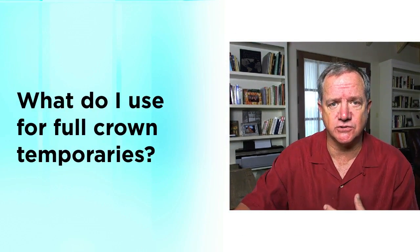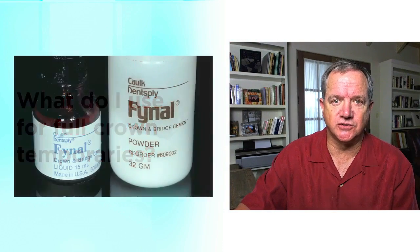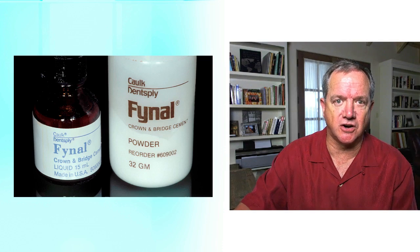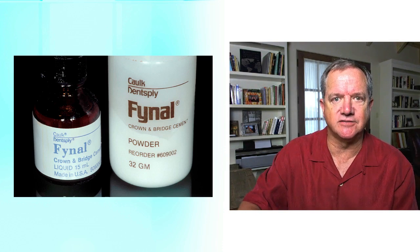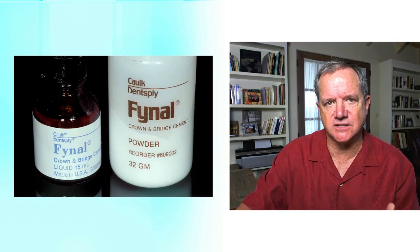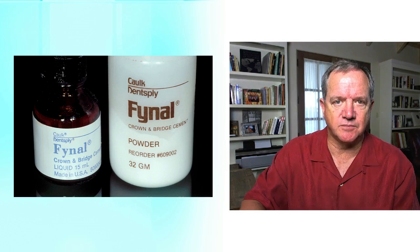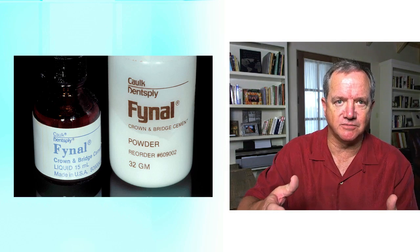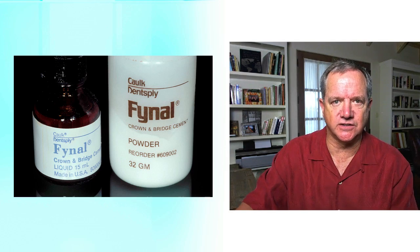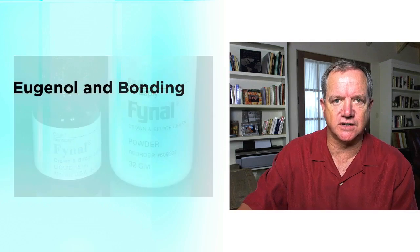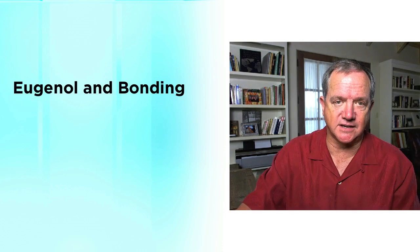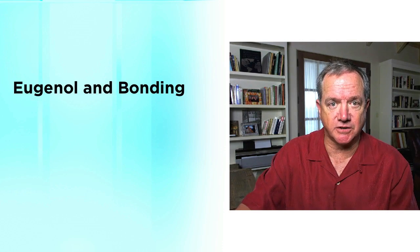Now, what do I personally use for full crown temporaries? Well, for pretty much 30 years, my typical temporary cement for full crowns has been Caulk Finol — for inlays, for retentive onlays, for full crowns. It's a reinforced ZOE cement, much like IRM is. Great properties: temporaries don't come loose, and the teeth are almost never sensitive underneath it because of the eugenol contained within it. And let's talk about eugenol and bonding, because I do a lot of bonded restorations on my full crowns.